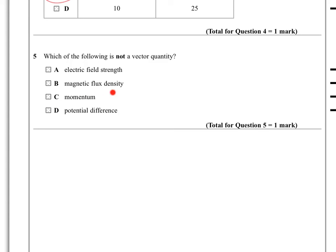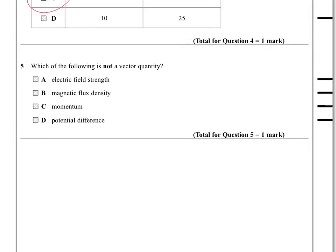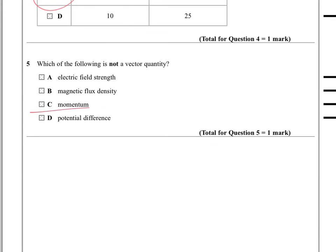And potential difference is the closest thing to a non-vector. Many of you would probably argue that potential difference, there is a direction to it, therefore you're wondering what's going on here. But anyway, the answer is D.